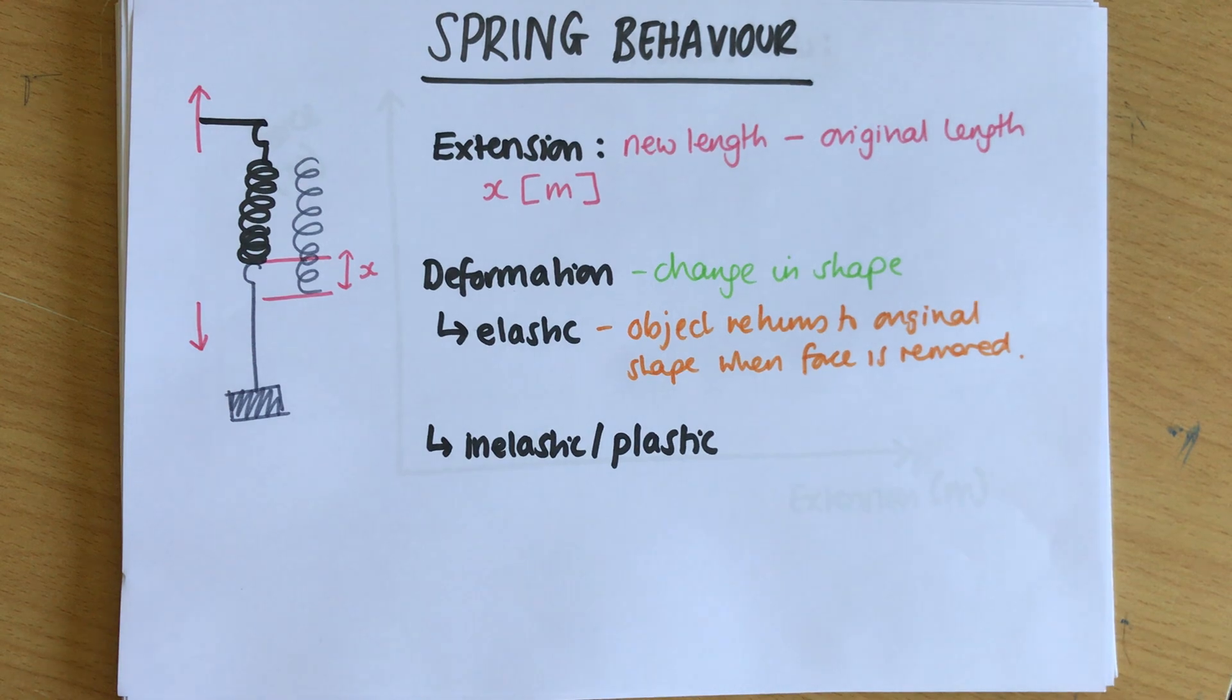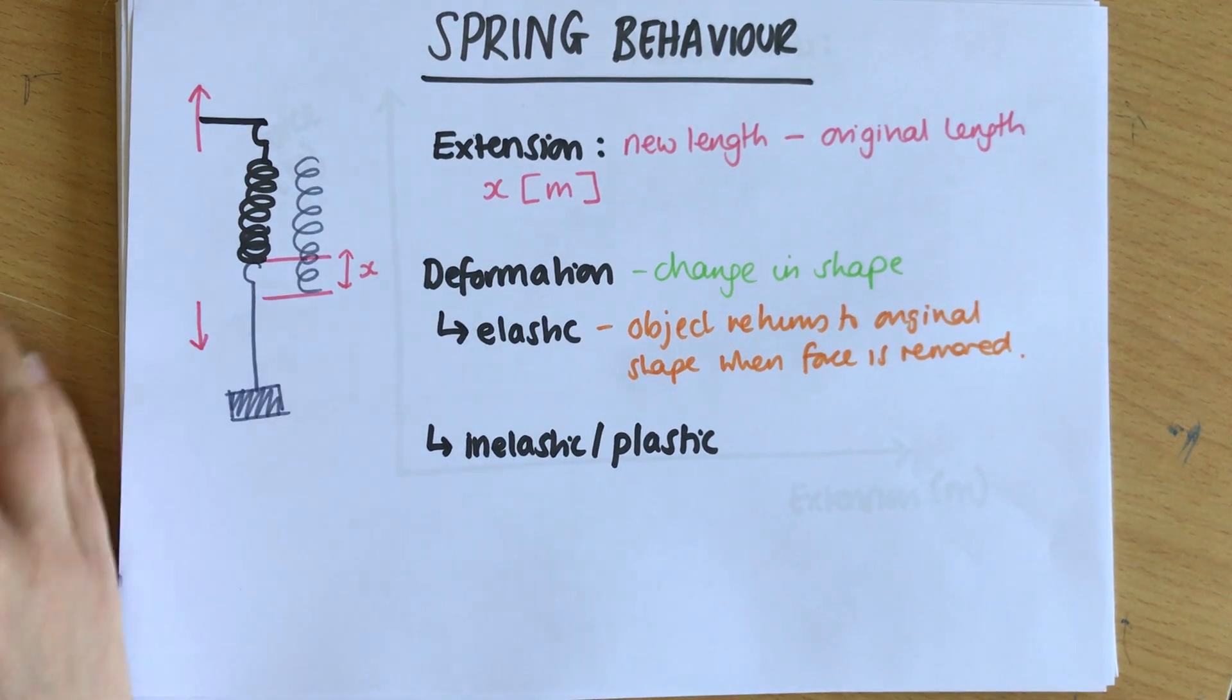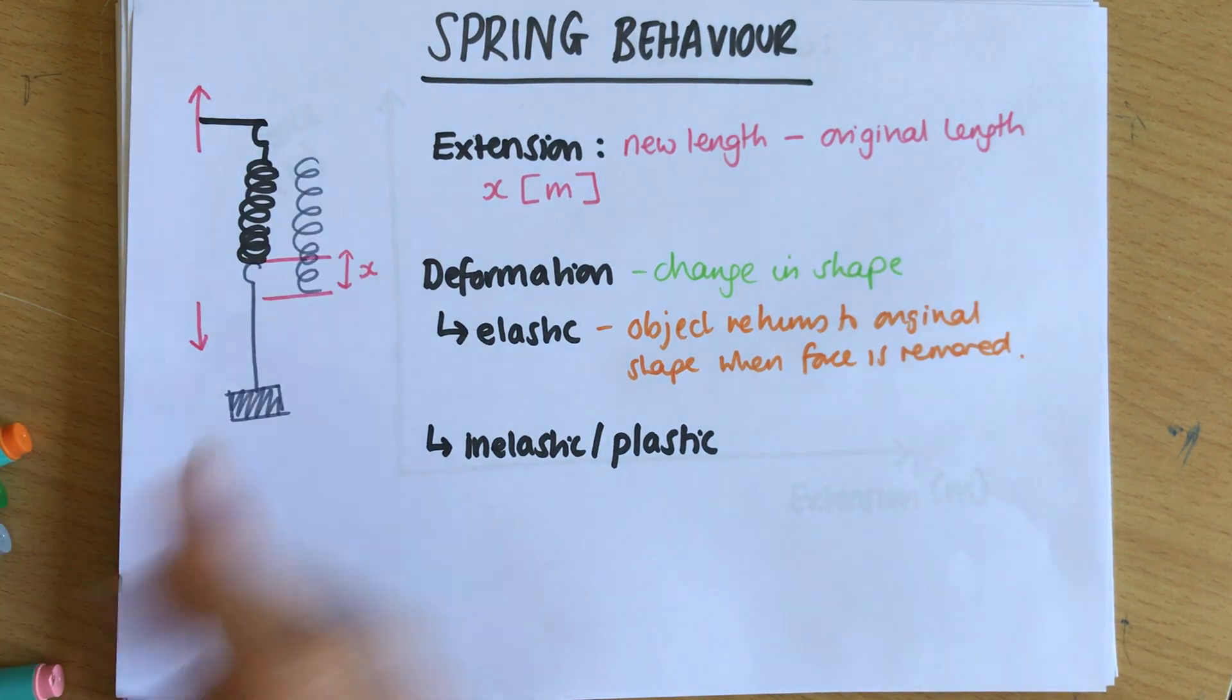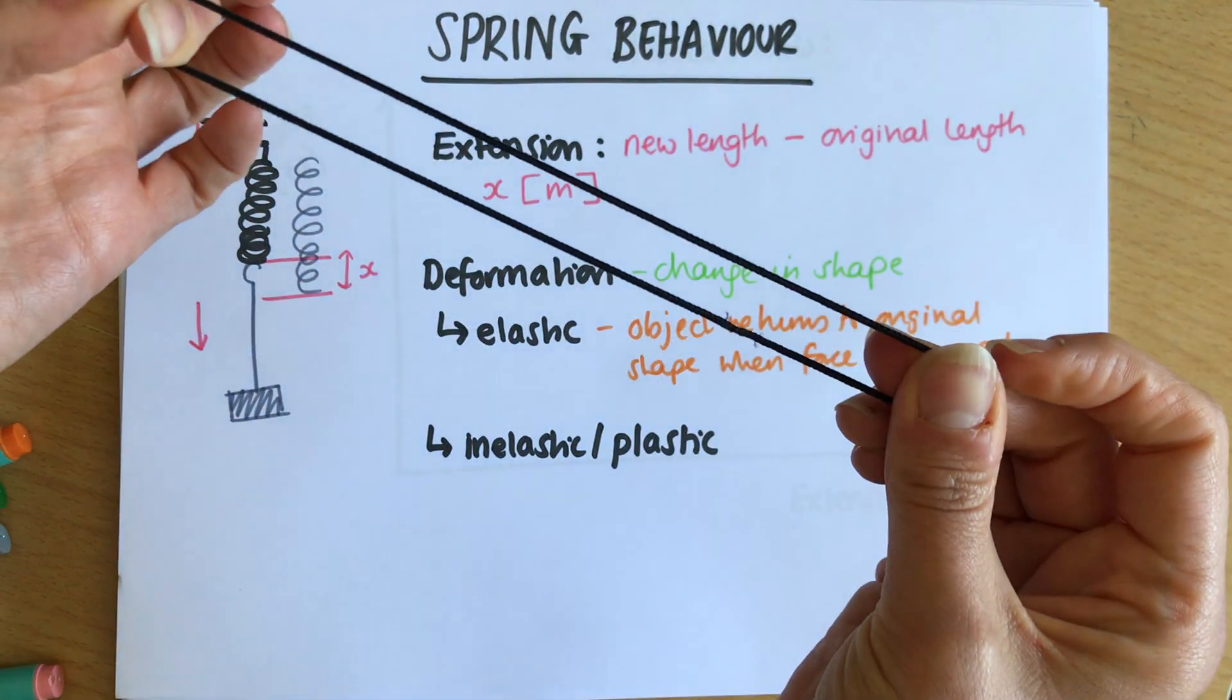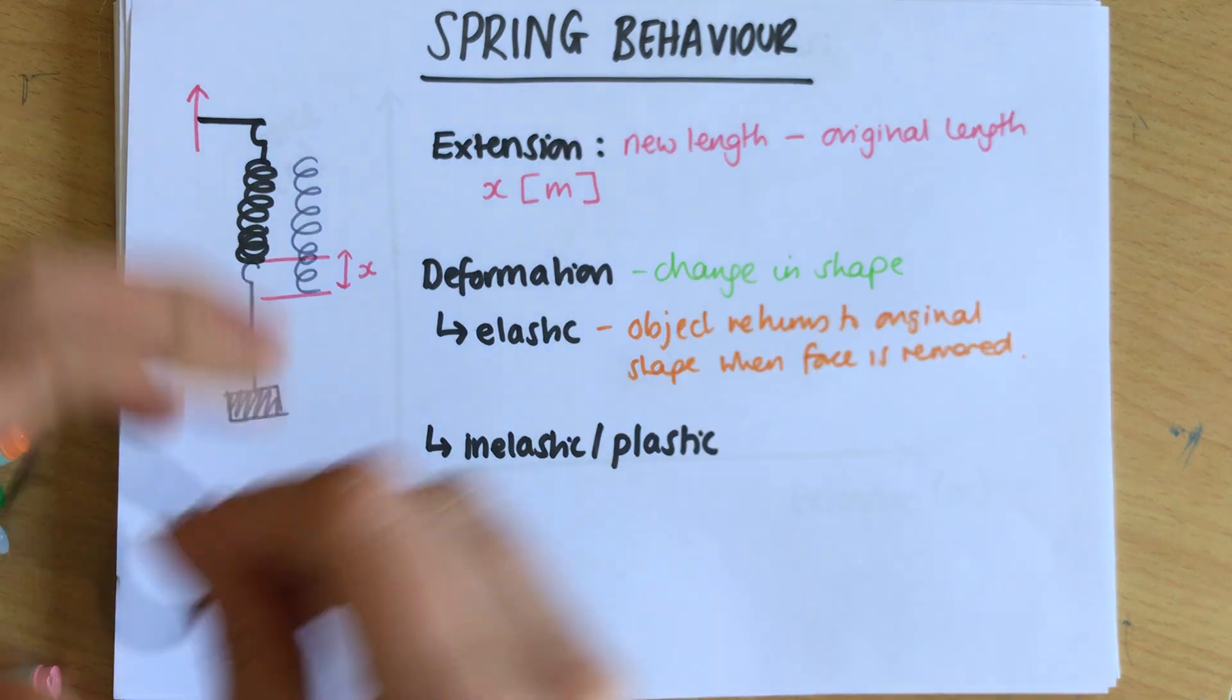A classic example is a spring—when you take this mass off the spring will go back up to its original height. Another example is a hair elastic, so when I stretch it but when I let go it goes back to its original shape.